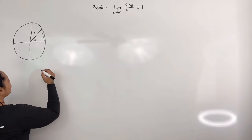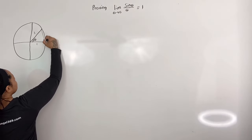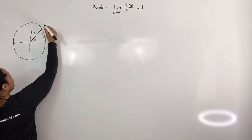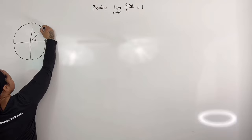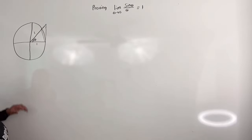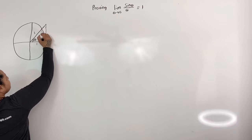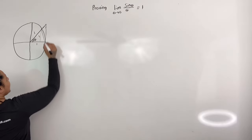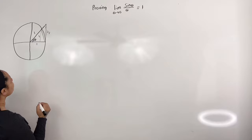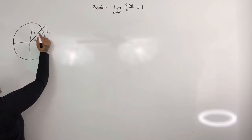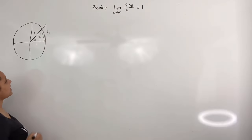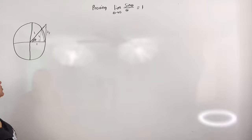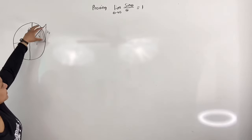Now I'm going to draw a straight line up from the terminal point of angle theta and extend it so the two lines meet. Notice that we now have a bigger triangle. I'm going to call the height of the smaller triangle h1 and the height of the bigger triangle h2. Notice that the dotted line creates a 90-degree angle, and the bigger triangle also has a 90-degree angle. I'm going to draw the smaller triangle, the sector, and the bigger triangle separately.